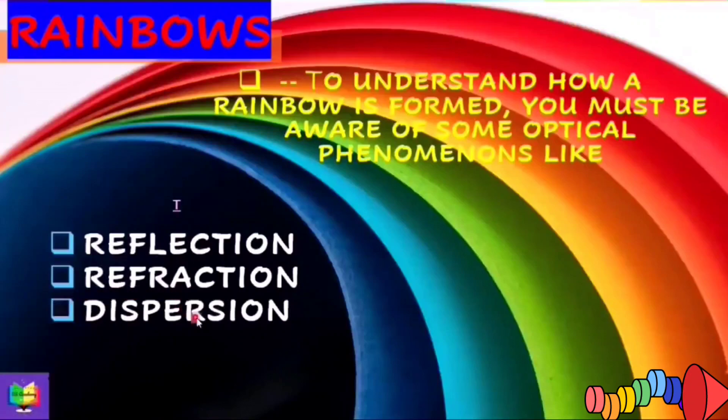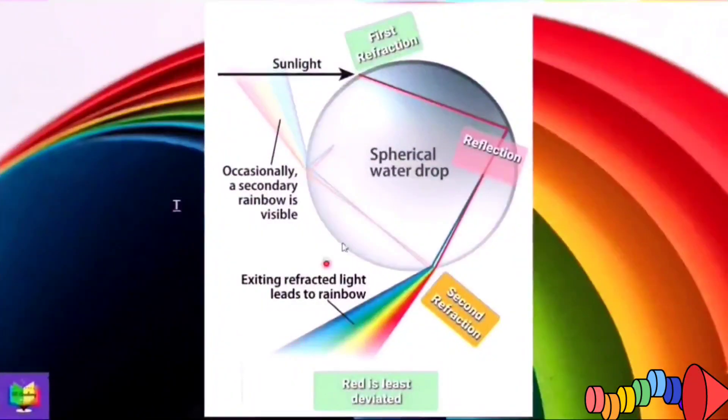Now let's see what happens when white light or light from sun is incident at a water droplet. This is a water droplet in air. When sunlight is incident at this surface, refraction will take place and as light is traveling from a rarer to a denser medium, that is from air to water, the light will be refracted towards the normal.